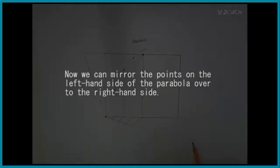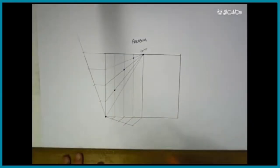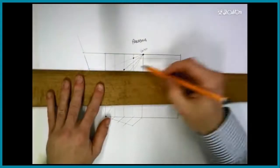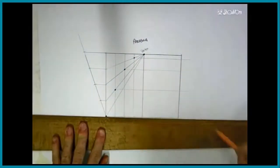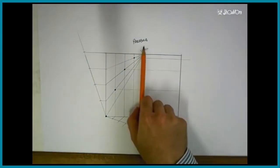Because a parabola is symmetrical, we don't need to go through this process again. Instead, we can simply mirror over the points to the right hand side. This is a form of axial symmetry.